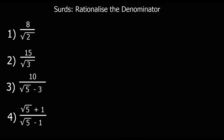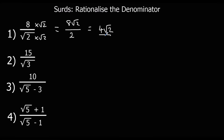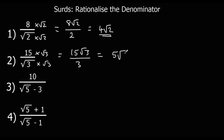Here are some questions for you to try — pause the video and give them a go. For the first one, I'm going to times the top and bottom by root 2; that will get rid of the root 2 from the bottom. So I've got 8 root 2 over 2, which is 4 root 2. For the next one, I'm going to times by root 3, giving 15 root 3 over 3, which simplifies to 5 root 3.